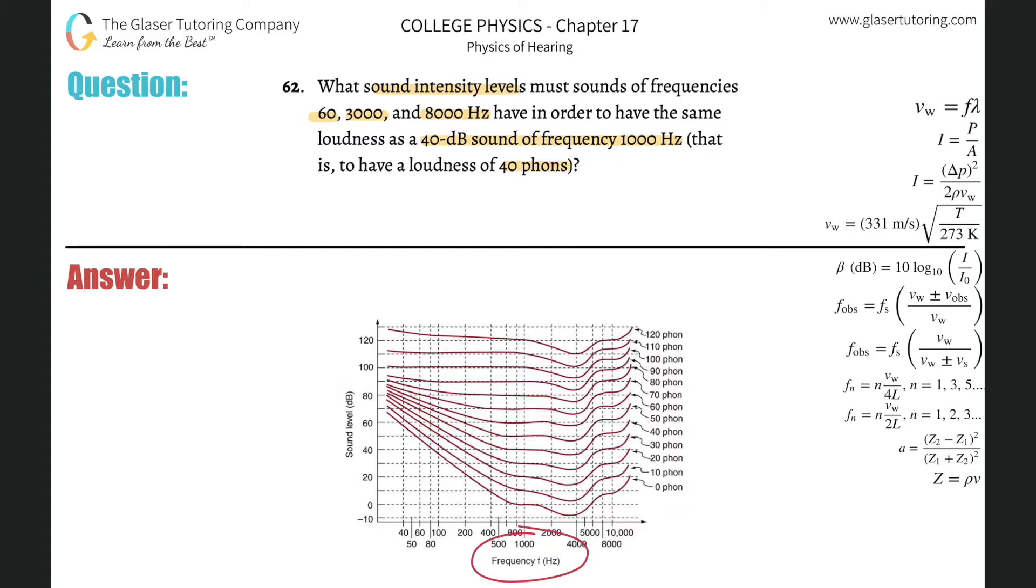First thing is we've got frequency on the x-axis, sound level decibel on the y-axis. First thing is locate your frequencies here, 60, 3000, and 8,000 on the graph, and draw a vertical line at each.